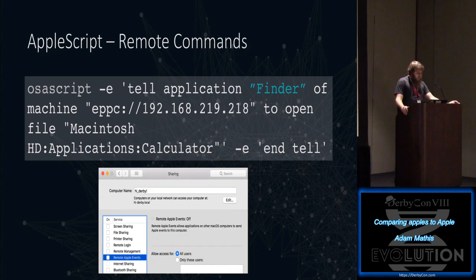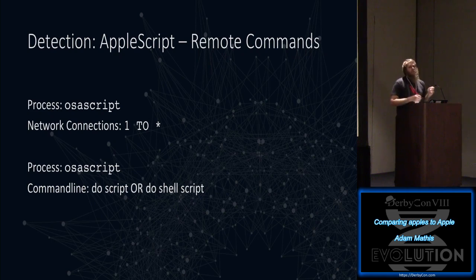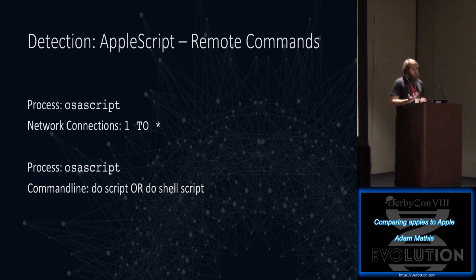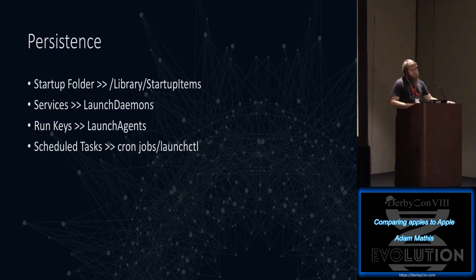Remote Apple Events can be toggled on and off, and you can also turn them on remotely through an SSH session using the kickstart utility. For detection: look for osascript with network connections, and watch for anything passing 'do script' or 'do shell script' on the command line, since attackers can layer Python inside bash inside osascript to heavily obfuscate what they're doing.